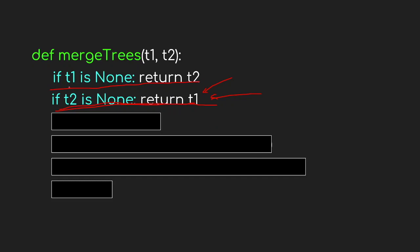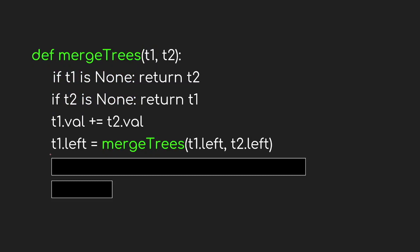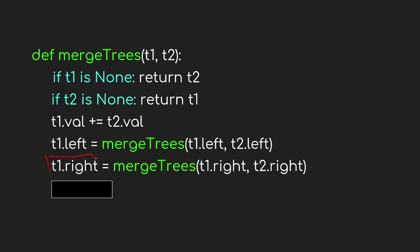If the function has not returned at those two points, we know both t1 and t2 are not null. In this case, we use t1 as our final answer tree. We increment t1's root value by t2's root value. Then the recursion comes in: we set the left child of t1 to be the result of overlapping t1's left child with t2's left child, and the right child of t1 to be the result of overlapping t1's right child with t2's right child. Then we return t1.